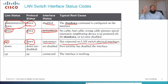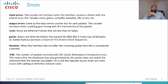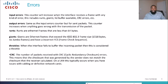Now for errors — there are all types of errors we can see with the show interface command. This is an example showing circled fields for input errors and output errors. The input error counter increases when the interface receives any frame with any kind of error — it includes runts, giants, no buffer available, CRC errors, and so on.